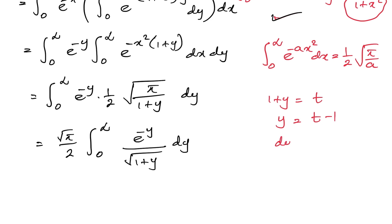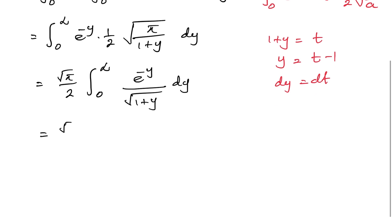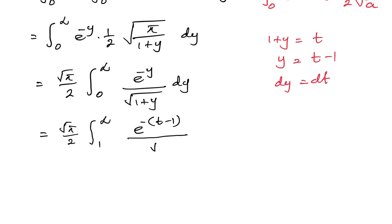With the substitution 1 plus y = t, we have y = t minus 1 and dy = dt. The limits change: when y approaches 0, t approaches 1; when y approaches infinity, t approaches infinity. Substituting gives square root of pi over 2 times the integral from 1 to infinity of e to the minus (t minus 1) over square root of t times dt. We can factor out e, giving e times square root of pi over 2 times the integral from 1 to infinity of e to the minus t over square root of t dt.